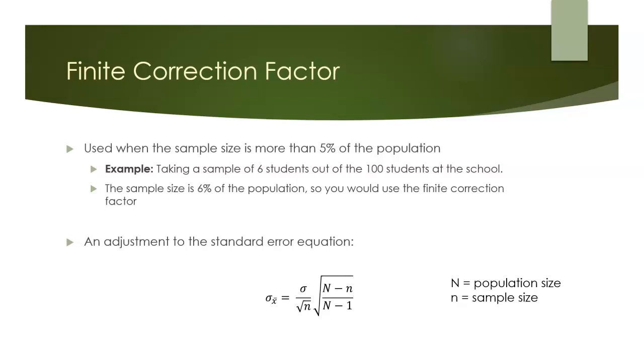Now, what this is going to do is it's going to decrease your error. So rather than looking at it as you have to use your finite correction factor, you can spin that and say you get to use your finite correction factor. It will include a little bit of extra work, but you are lowering your standard error because we took a large enough sample.